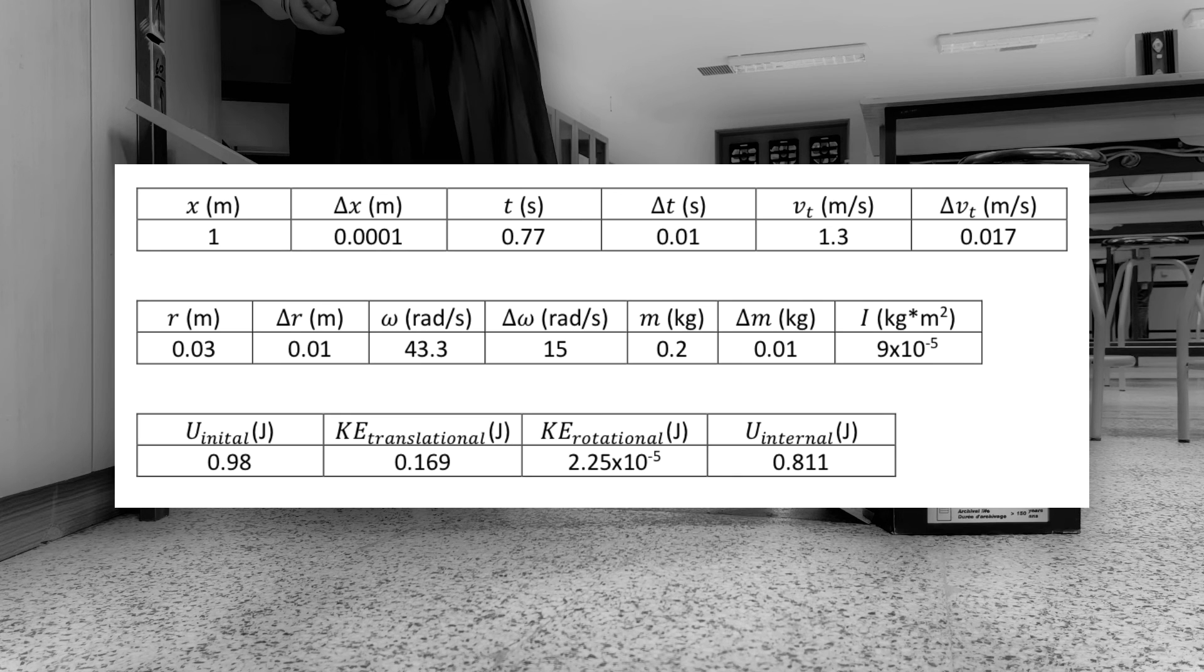Also, you can see that by looking at the chart, total initial energy couldn't be completely converted to the total kinetic energy. Because work done by friction didn't completely convert to the rotational energy, this caused some part of potential energy to convert to internal energies.